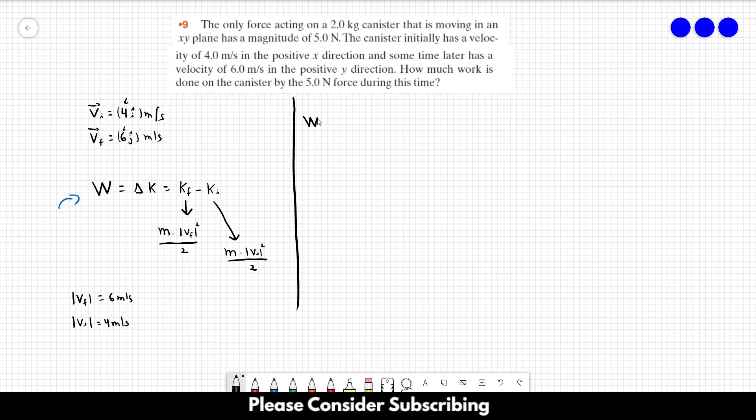So the work is equal to M times the absolute value of the final velocity squared over 2 minus mass times the absolute value of the initial velocity squared over 2.